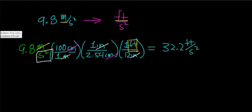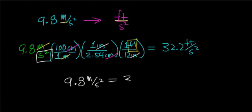So these two units are equivalent. You can equally say that gravity accelerates objects at a rate of 9.8 meters per second squared, or you can say that gravity accelerates objects at a rate of 32.2 feet per second squared.